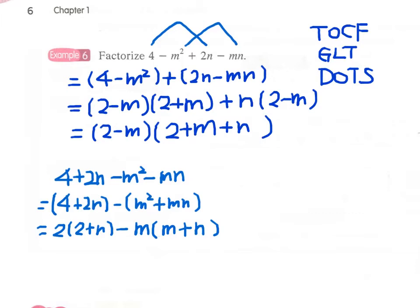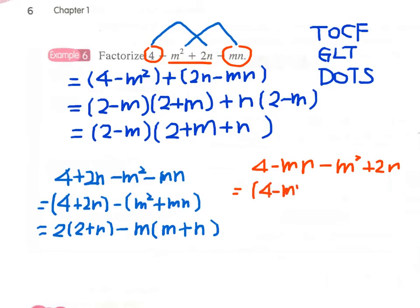We can also try grouping the first and fourth terms together and the second and third terms together. Rearranging as 4 minus mn minus m squared plus 2n and separating into two groups gives minus bracket m squared minus 2n. Again we reach a dead end — no common factor, no grouping of like terms, and no difference of two squares.